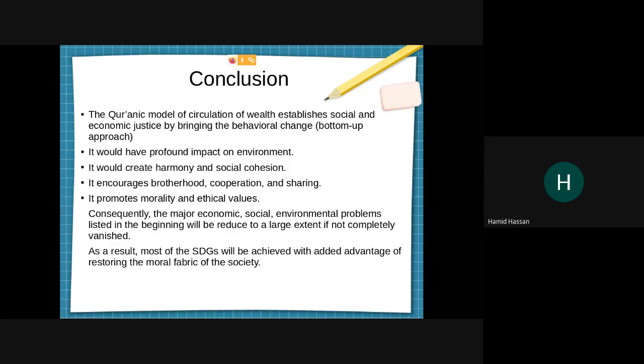In conclusion, the Quranic model of circulation of wealth establishes social and economic justice by bringing behavioral change through bottom-up approach. It would have profound impact on environment and creates harmony and social cohesion. It encourages brotherhood, cooperation and sharing, and promotes morality and ethical values. Consequently, the major economic, social and environmental problems listed in the beginning will be reduced to a large extent, if not completely vanished. As a result, most of the SDGs will be achieved with added advantage of restoring the moral fabric of society and getting rid of conflicts and wars.